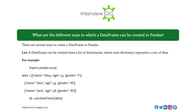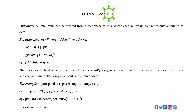There are several ways to create a DataFrame in pandas. From a list: a DataFrame can be created from a list of lists. From a dictionary: a DataFrame can be created from a dictionary of lists where each key-value pair represents a column of data. For example: data = {'name': ['Alia', 'Alex', 'Jack'], 'age': [23, 33, 38], 'gender': ['F', 'M', 'M']}, df = pd.DataFrame(data).